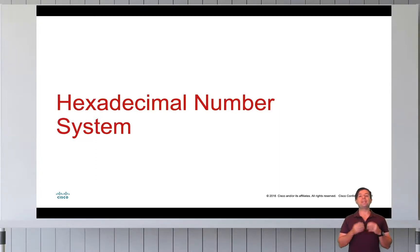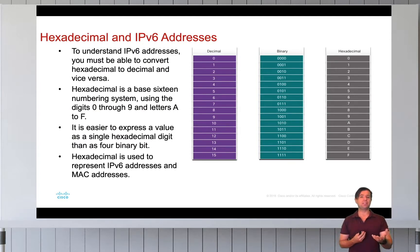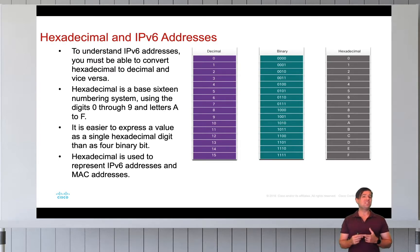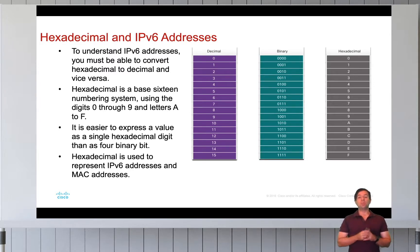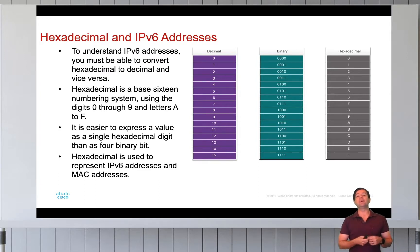Next, let's look at the hexadecimal number system. Hexadecimal is also referred to in shorthand as simply hex. Why do we care about hex? Because IPv6 addresses are written in hex and so are MAC addresses. What's different with hexadecimal? Binary is base 2, decimal is base 10, and hexadecimal is base 16.